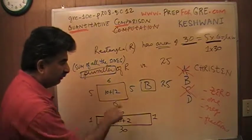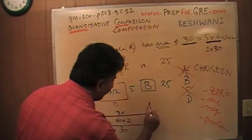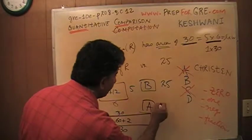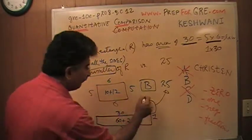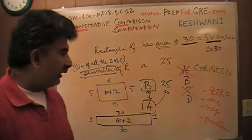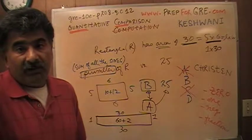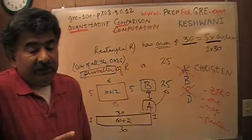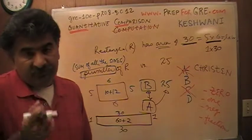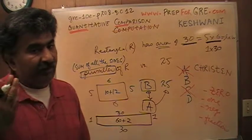Before this was 22. So before the answer was B, now the answer is A, because we are comparing it with 25. Because we have conflicting answers, depending on which rectangle we are dealing with, all they tell me is that the area is 30. It doesn't tell me what the dimensions are. And until I know the exact dimensions, I cannot tell you the perimeter.